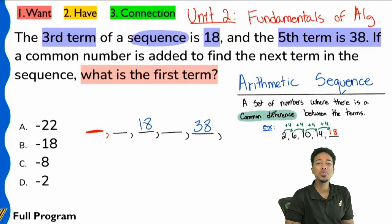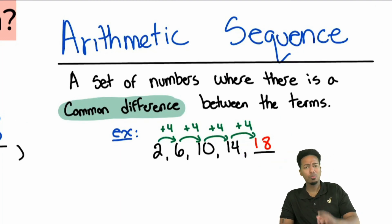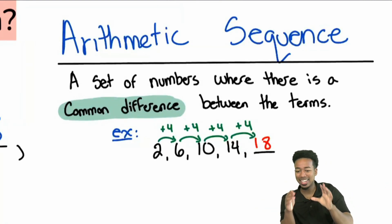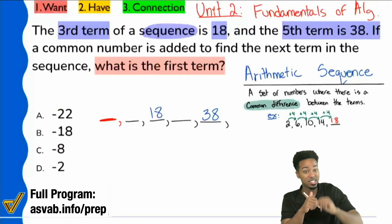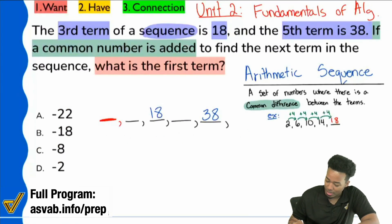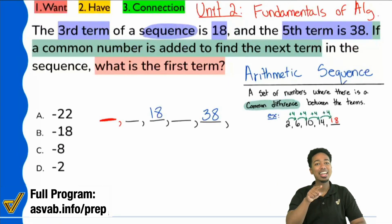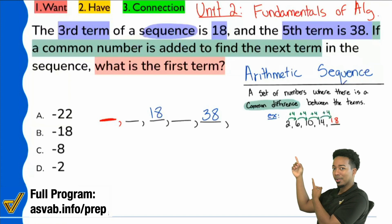Now it's a little different from the previous example — we're not just finding the next one, we have the third and the fifth and need to work backwards to find the first. The biggest key here is: they tell you that a common number is added to find the next term. Is that the same thing as the common difference we just talked about? It is — that's how you know this is an arithmetic sequence.